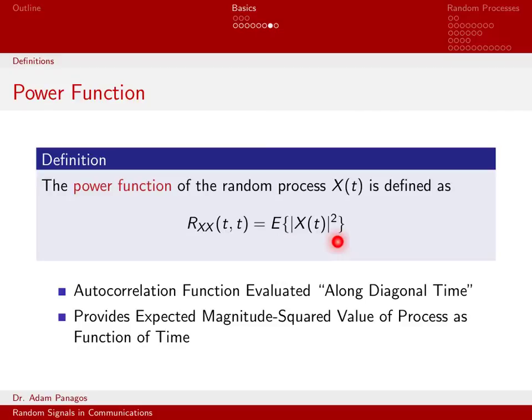So that wraps up a few of the fundamental definitions we wanted to make: the power function, the variance function, the autocovariance function, to go along with the other definitions we had in the previous video. Now let's go ahead and work a specific example. We'll actually have a random process and we'll compute some of these functions for that random process and get a little practice actually working the math for a specific instance of a random process that we'll define in the next video.